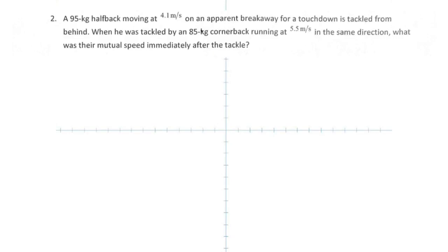What was their mutual speed immediately after the tackle? When you see the word 'mutual speed,' you understand that the cornerback held on to the halfback and they are moving together. So after the collision, they only have one velocity, which is the common velocity with which both move forward.